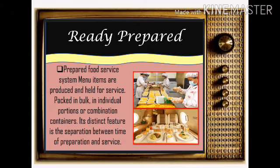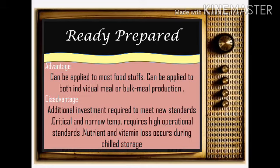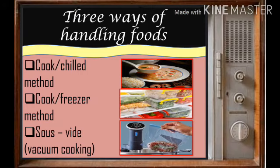The last type of food service system is ready prepared foods. Ready prepared foods can be in bulk, individual portions, or combination containers. An example is airline companies where foods are already ready prepared for passengers. The advantage is that it allows batch or individual production of food. The disadvantage is that they need to maintain all food temperatures and high operational standards so that nutrients and vitamins are not lost during chill storage.